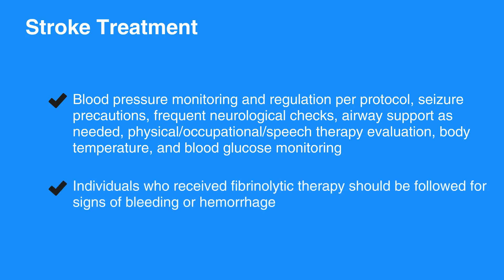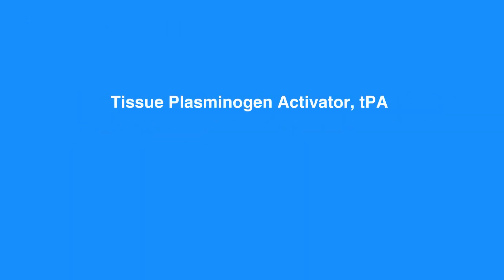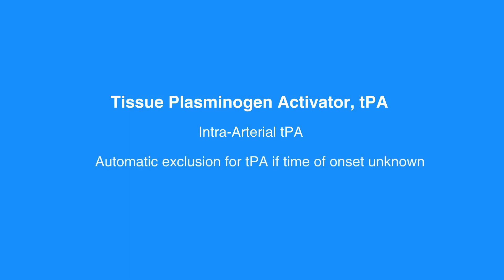Individuals who receive fibrinolytic therapy should be followed for signs of bleeding or hemorrhage. Certain individuals aged 18 to 79 years with mild to moderate stroke may be able to receive TPA, or tissue plasminogen activator, up to 4.5 hours after symptom onset. Under certain circumstances, intra-arterial TPA is possible up to 6 hours after symptom onset. When the time of symptom onset is unknown, it is considered an automatic exclusion for TPA.